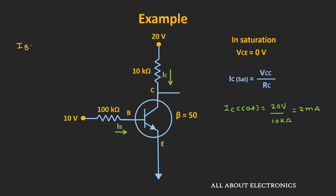Now let's also find out the base current. The base current Ib is equal to 10V minus 0.7V — that is the drop between the base and the emitter terminal — divided by 100kΩ. That is equal to 9.3V divided by 100kΩ. So for the given circuit, the value of the base current Ib is equal to 93μA.